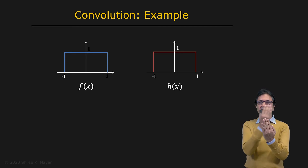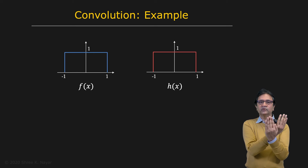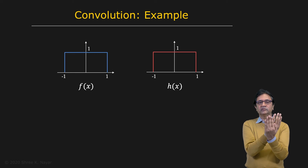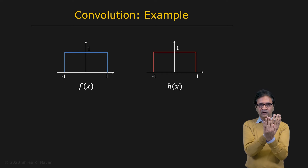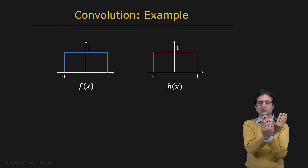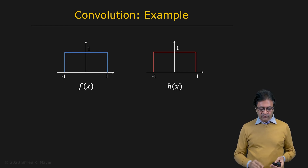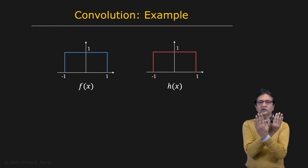And then you have f of x here and h of x. You take h of x flipped, and now you're going to move it. And at each point, you're going to take the product of h with f and then integrate it out to get the result for that point. So what's going to happen is, for most of the time as you come from minus infinity, the result is going to be zero.